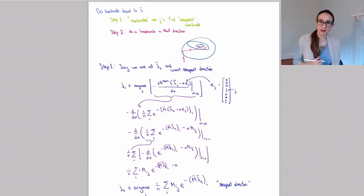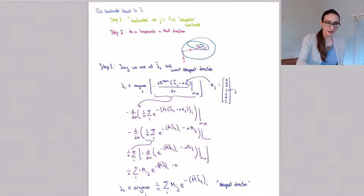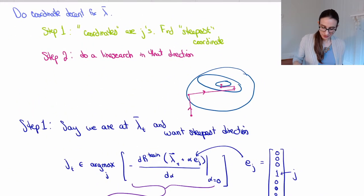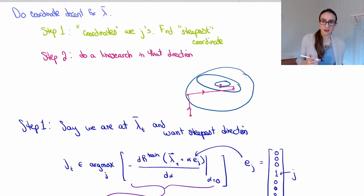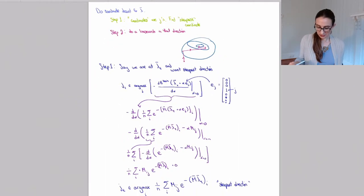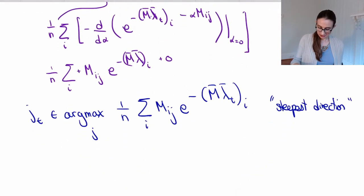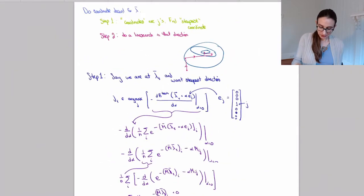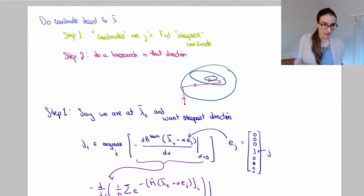We're continuing our coordinate descent calculation for AdaBoost. Coordinate descent is the procedure where you alternate steps between choosing an optimal direction and walking an optimal distance in that direction. In the last video we derived which direction we want to walk in — that's the direction given by that formula right there — and in this video we're going to work on doing that line search.